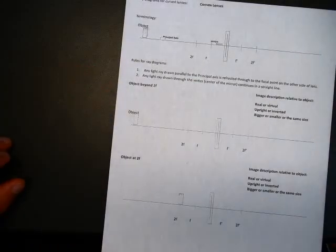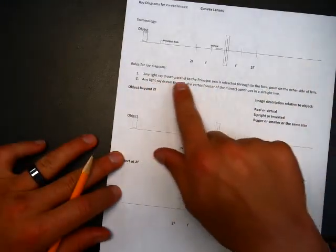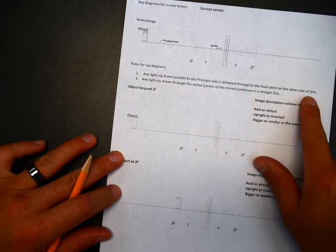All righty guys, in this first video I'm going to show you how to follow these two rules. I'm going to read you the first two rules. Any light ray drawn parallel to the principal axis is refracted to the focal point on the other side of the lens.